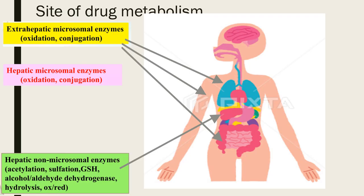Now, sites of metabolism. Drugs are metabolized at various sites. The first major site is the liver, involving hepatic non-microsomal enzyme metabolism. Other sites are extra-hepatic microsomal enzymes, such as in the lungs, skin, and intestine. These are all sites where drugs are metabolized.